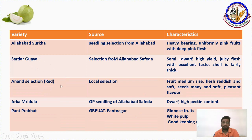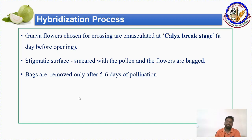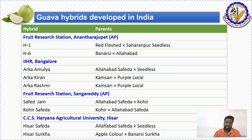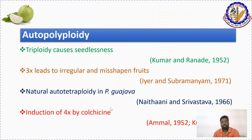Hybridization means crossing male and female parents. The important stage for emasculation in hybridization is the calyx crack stage — as discussed in floral biology, it happens one day before flower opening. After emasculation, the stigmatic surface is smeared with pollen and bagging is done. Examples include varieties developed at Anantarajupet in Andhra Pradesh, IHR Bangalore — Kamali, Kakirana, Karasmi — and at Sangareddy — Hisar Safeda and Hisar Surkha.